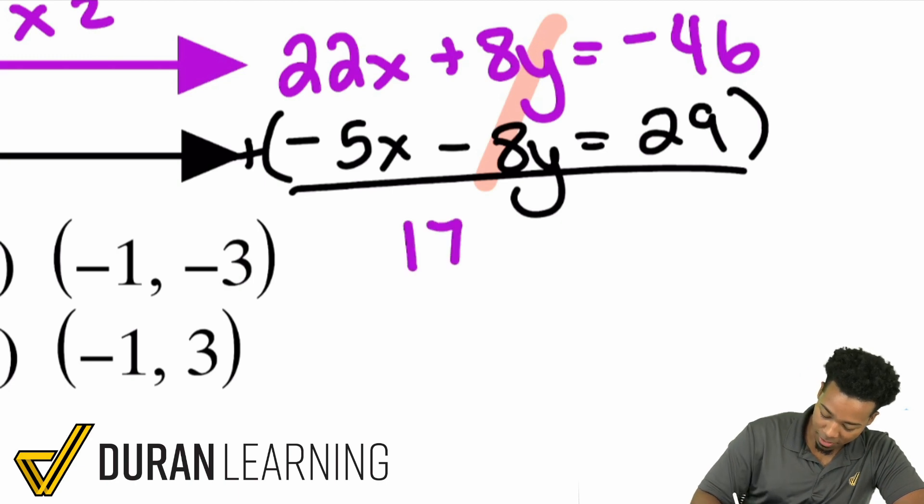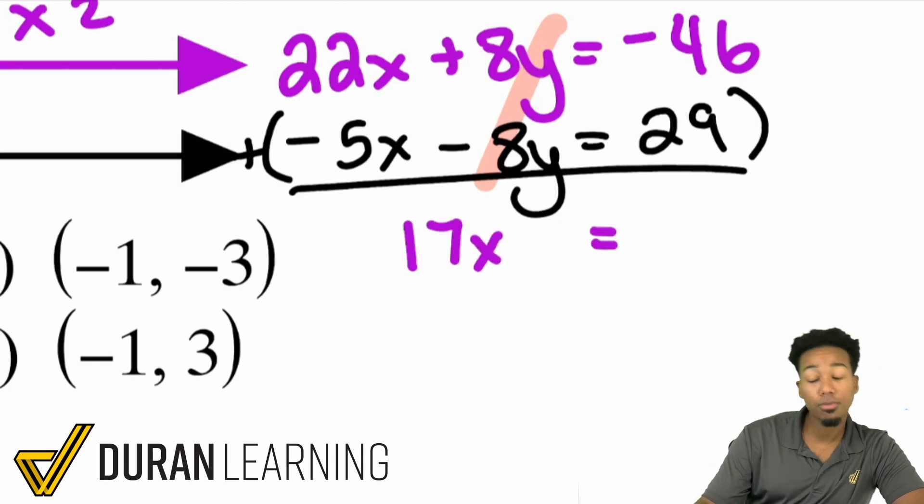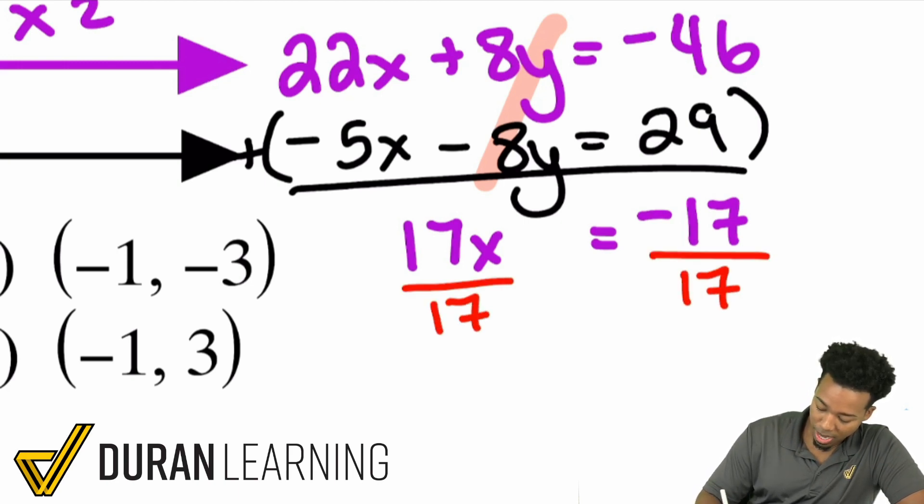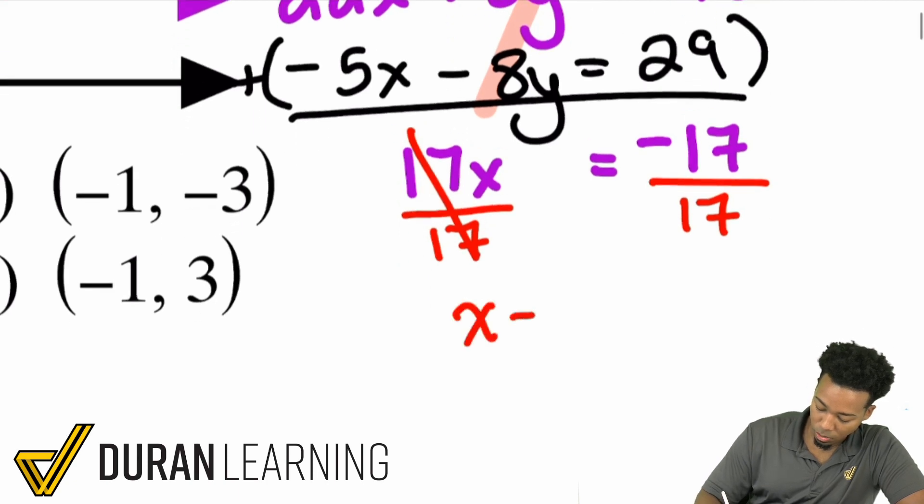The 8y and the negative 8y cancel out. 22 minus 5 for the x, that's going to give me 17x. Negative 46 plus 29, that's going to be negative 17. So we have 17x equals negative 17. And so the only thing we have to do to both sides is divide by 17. x equals negative 1.